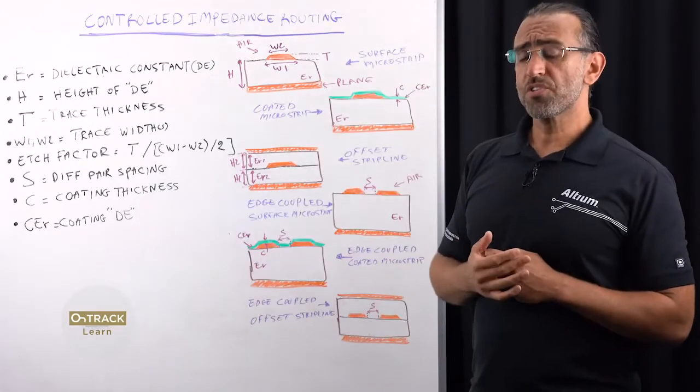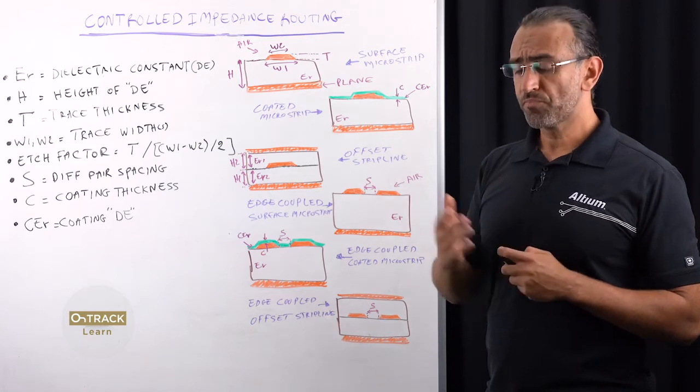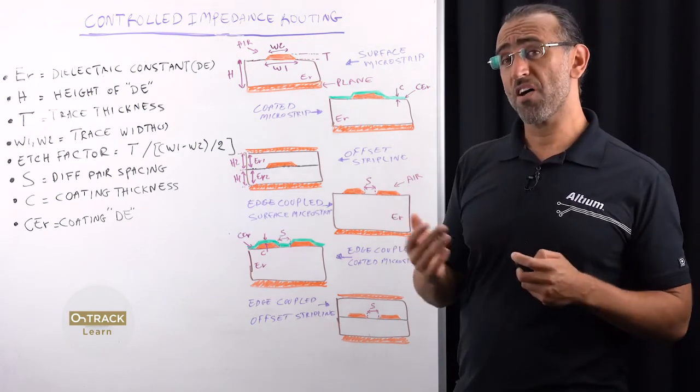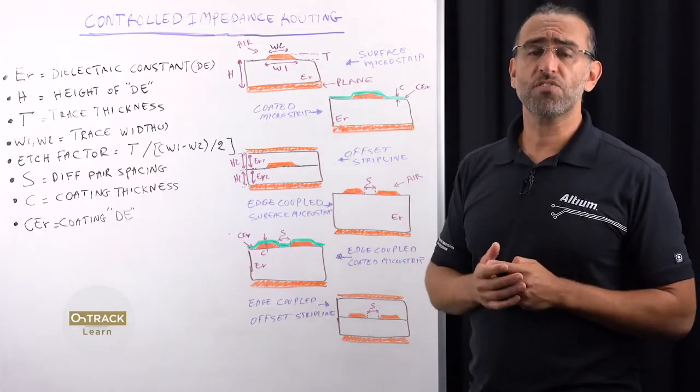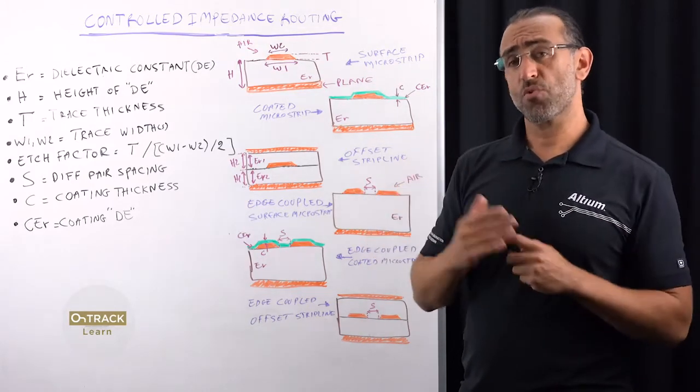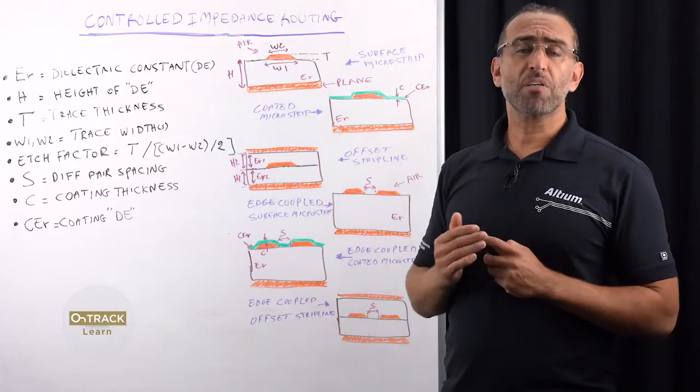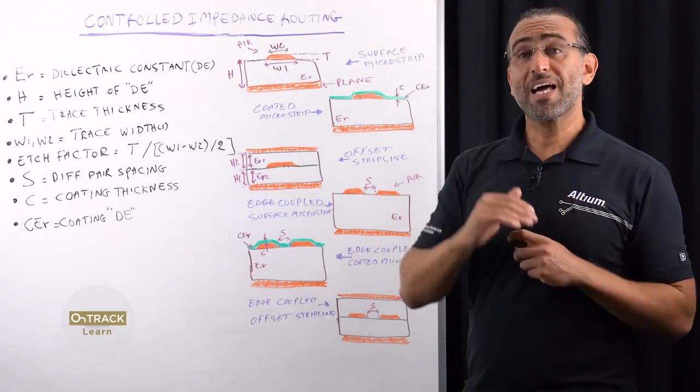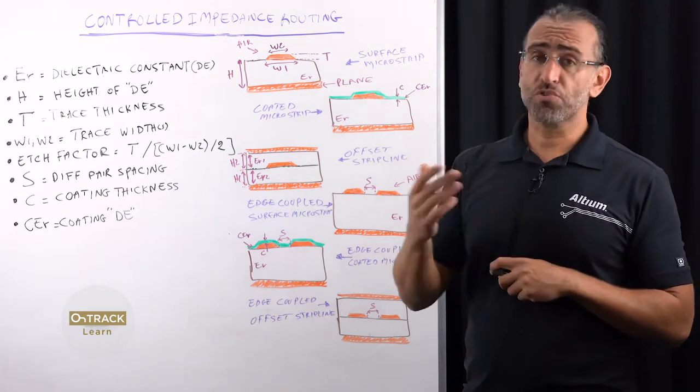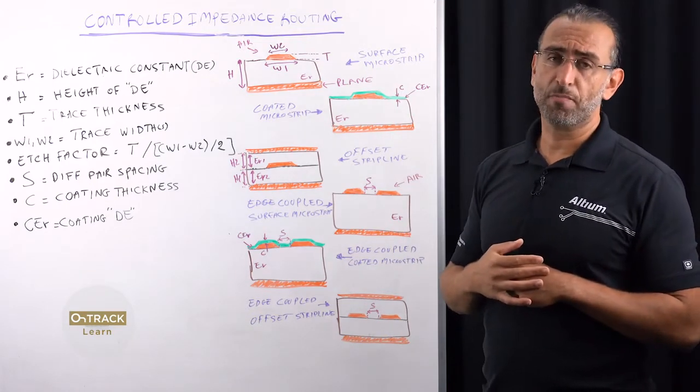But of course, on a multi-layer PCB, you have to consider the different possible configurations. For example, because track controlled impedances are shielded by planes or references, designers have to keep in mind to only consider the dielectric thickness between the plane and either side of the track. Of course, this is when calculating the impedance.